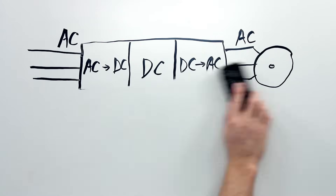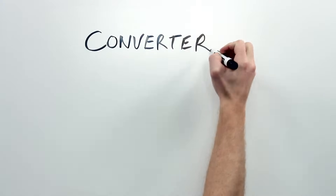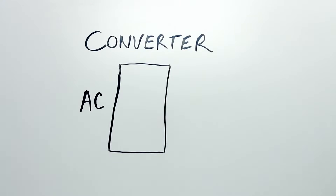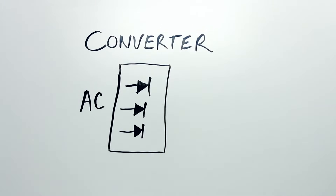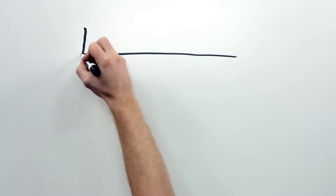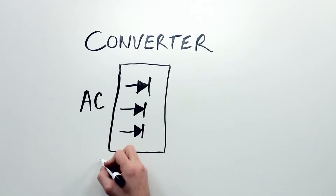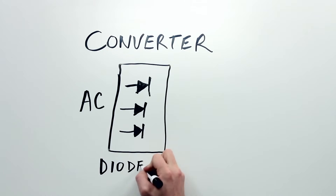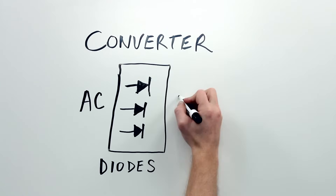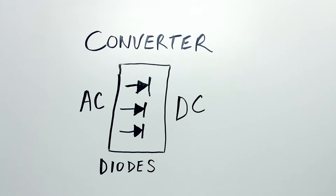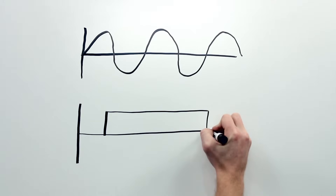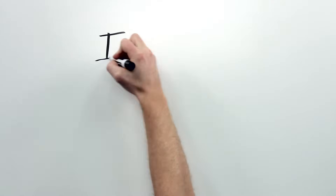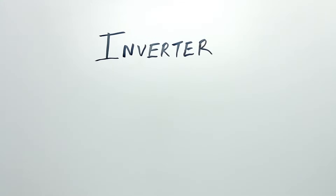That seems like a lot of work to take AC power, mess around with it, and then spit it back out. So let's figure out why. In the converter section, we have nice clean AC power coming from the utility on one side. Inside the converter, there are diodes that chop up that AC power and spit it out as DC. We use capacitors inside the drive to smooth out this DC so that the power looks flat until it turns off. Then the DC power gets onto the DC bus, which carries it over to the inverter section.